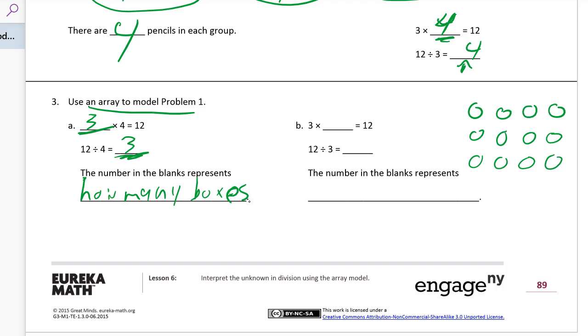And now we're looking at B, 3 times, now the missing factor is 4. And our quotient also is 4. We're still working with 3, 4, and 12, because it's the same array. It's the same array for both of them. Now we're looking at the 4's, right? The number in each blank is the 4's. The 4's are how many pencils are in each box.